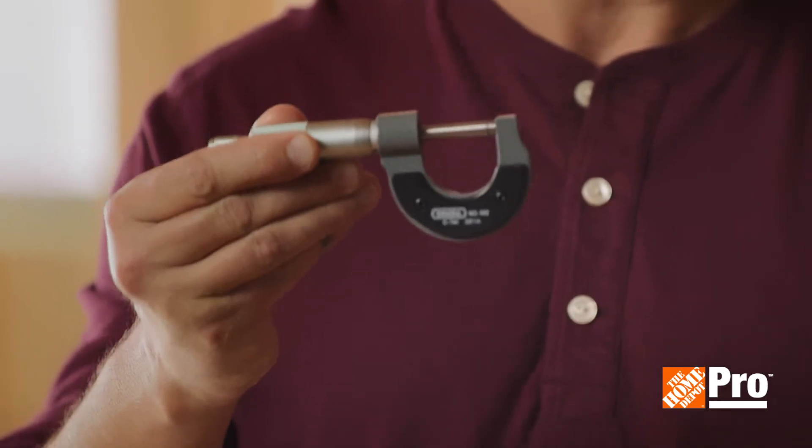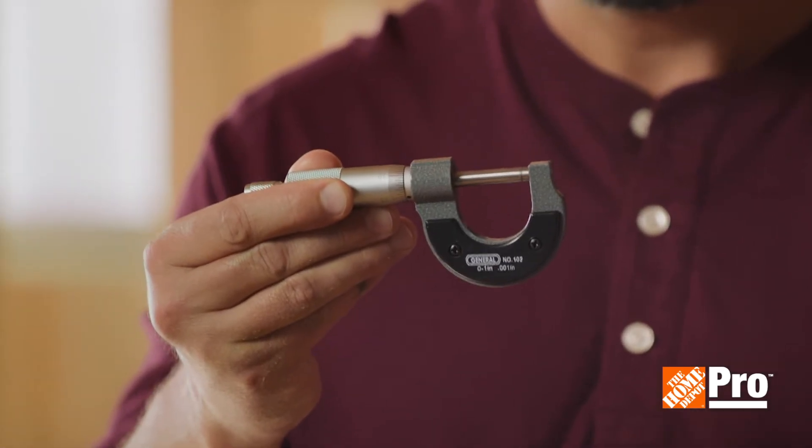Micrometers take small, precise measurements that would be too difficult to read by sight. This is an outside micrometer, which measures the external surface of an object.